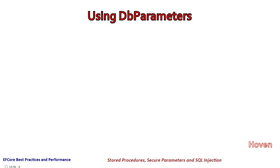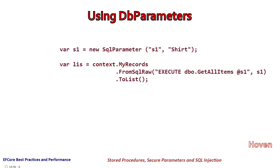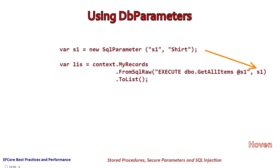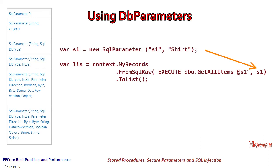We can also construct a DbParameter on our own and pass it to the FromSqlRaw function. In this code we have constructed a DbParameter of name s1, with the value passed as the second argument. This syntax allows us to use various overloads of SqlParameter to specify the direction of parameters, data types, etc., giving us a lot of fine-tuning capability. Notice that the parameter is now passed using the SQL placeholder @s1 in EXECUTE dbo.GetAllItems @s1. This is how we can execute stored procedures and pass parameters in a secure manner.